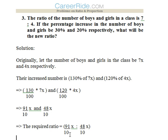Third question: The ratio of number of boys and girls in the class is 7 is to 4. If the percentage increase in the number of boys and girls be 30% and 20% respectively, what will be the new ratio? Now we know that the ratio between boys and girls is 7 is to 4, so we assume the number of boys and girls to be 7x and 4x respectively.